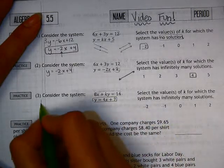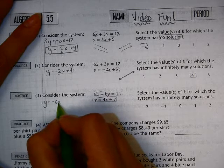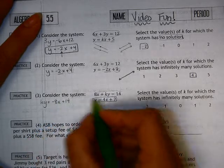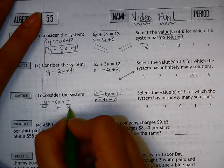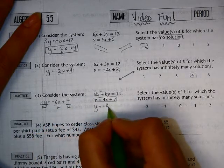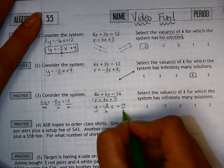What I'm going to do is move things around so it looks like this one here. I'm going to have ky equals negative 8x plus 14, and then I'm going to put the k underneath all of these. So I'm going to have y equals negative 8 over k plus 14 over k.